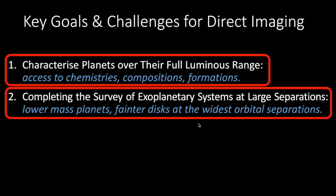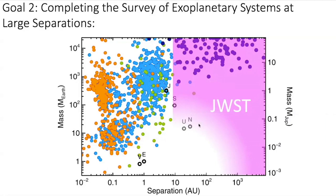JWST is also going to help us complete the survey of exoplanetary systems at the widest orbital separation. This plot shows our current understanding of exoplanet demographics — on the vertical axis we have masses in Earth and Jupiter masses, and on the horizontal axis orbital separation in AU. The orange and blue points correspond to transiting and radial velocity planets, and the dark blue points are directly imaged objects. The lower right of this plot is really unexplored, and this is where JWST is going to make a huge impact, with the sensitivity to constrain populations of exoplanets at wide orbital separations.